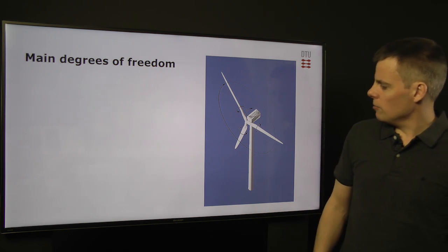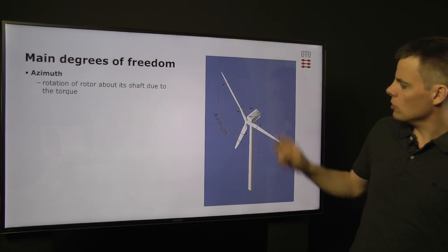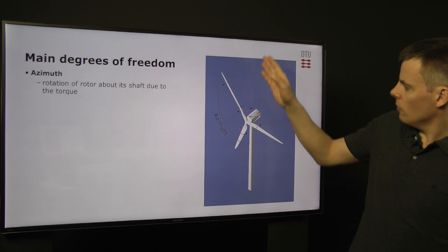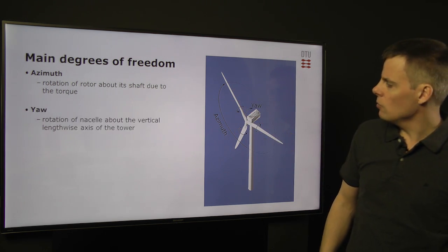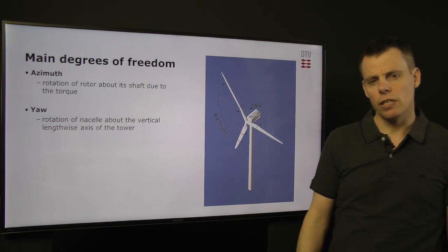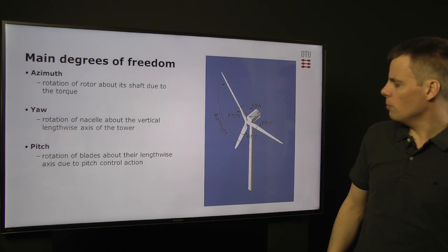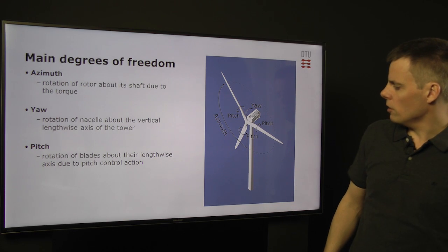The main degrees of freedom of wind turbine is the azimuth, the rotation of the rotor. Normally it's calculated from vertical distance, the azimuth angle. We have the yaw, which is the degree of freedom that is used to turn the nacelle into the wind and the whole rotor. And then we have the pitch angle, which is rotations of the blades about its lengthwise axis, as typical due to a controller action.